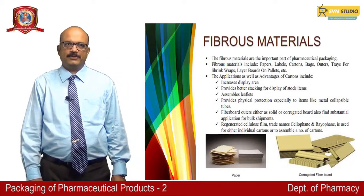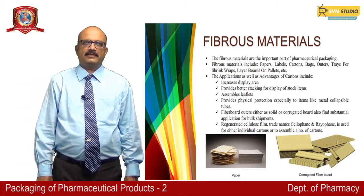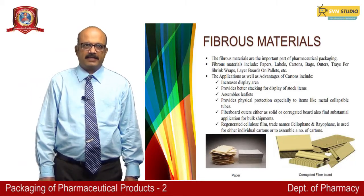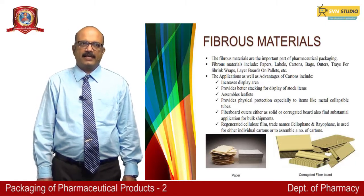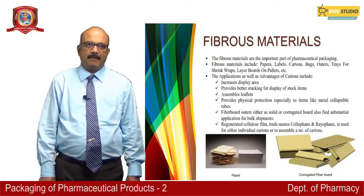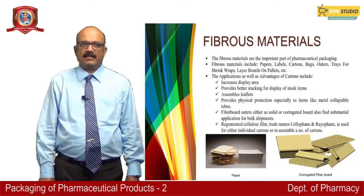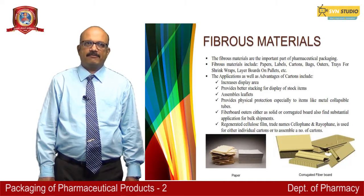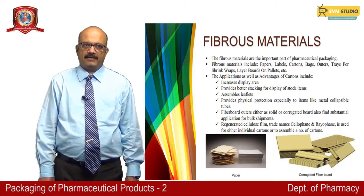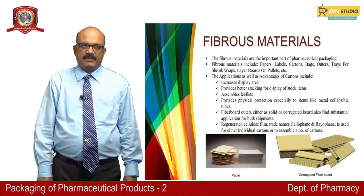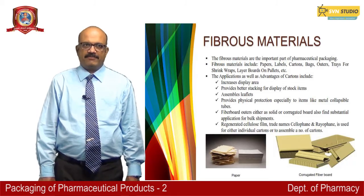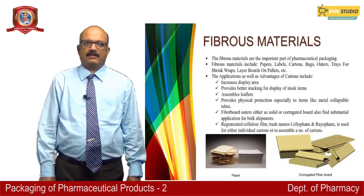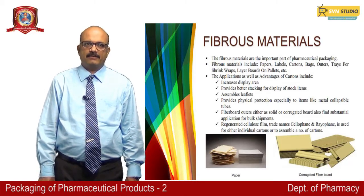Fibrous materials can also be used for pharmaceutical packaging and are an important part of it. Fibrous materials include papers, labels, cartons, bags, outers, trays for shrink wraps, and layer boards on pallets. The advantages of cartons are that they increase the display area of the product, provide better stacking for display of stock items, allow assembly of leaflets, and provide physical protection especially to items like metal collapsible tubes. Fiber boards and outers, either as solid or corrugated boards, also find substantial application for bulk shipments.